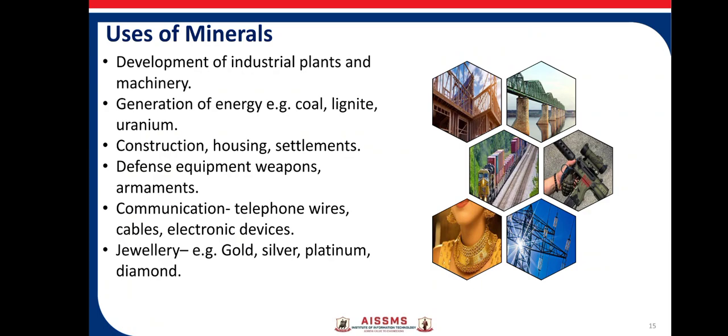Uses of minerals: They are used for development of industrial plants and machinery, and for generation of energy — using coal, lignite, and uranium. Coal is also called a black diamond because the majority of energy is produced from it. Minerals are also used for construction, housing and settlement; for defense equipment, weapons and ornaments; for communication purposes such as telephone wires, cables, and electronic devices; and to prepare jewelry like gold, silver, platinum, and diamond.